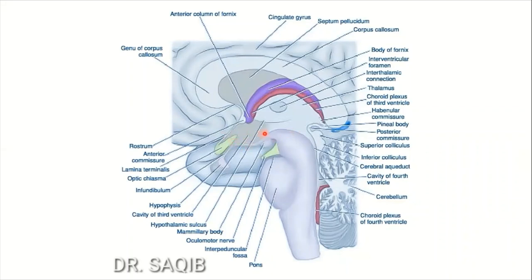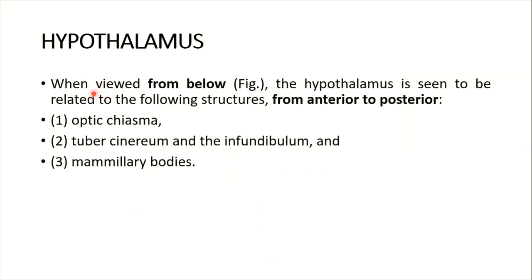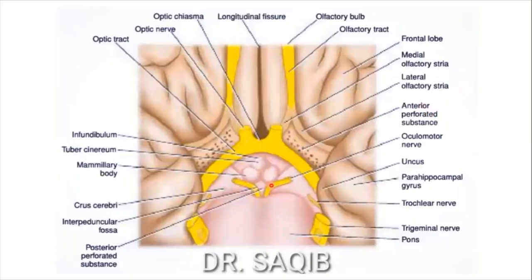Caudal to the hypothalamus, there is blending of the hypothalamus with the tegmentum of the midbrain. When viewed from below, the hypothalamus is seen related to the following structures from anterior to posterior - it is visible only from the inferior aspect, otherwise it is concealed. From anterior to posterior these structures are: the optic chiasma, then the tuber cinereum and infundibulum, and finally the mammillary bodies.